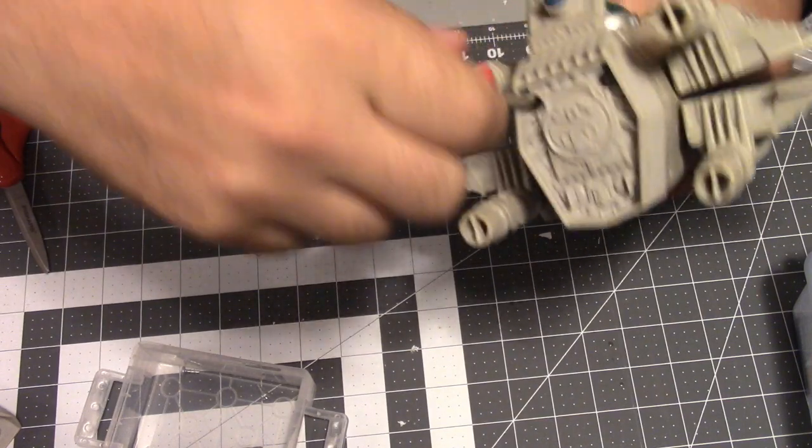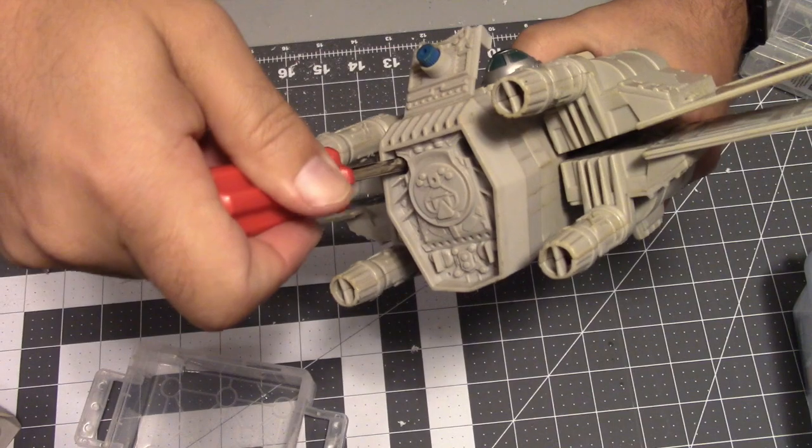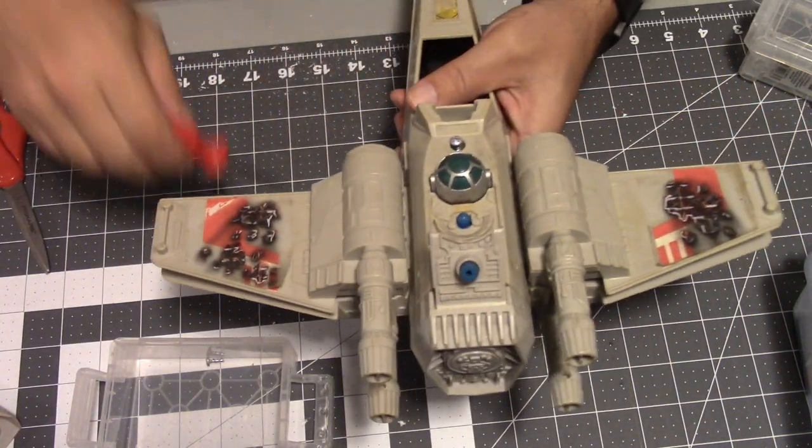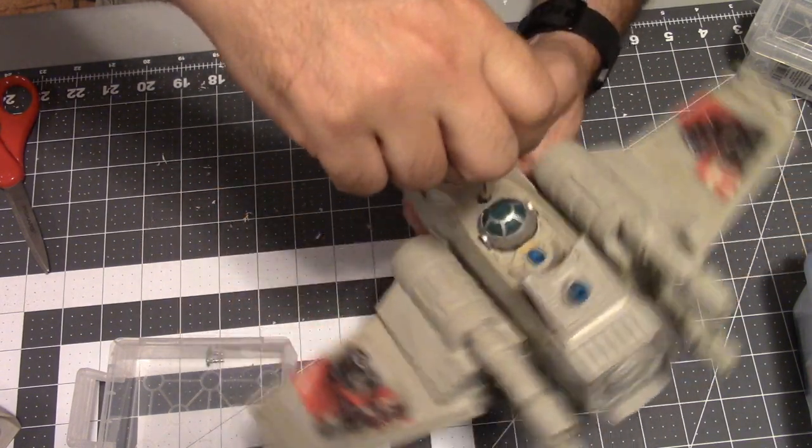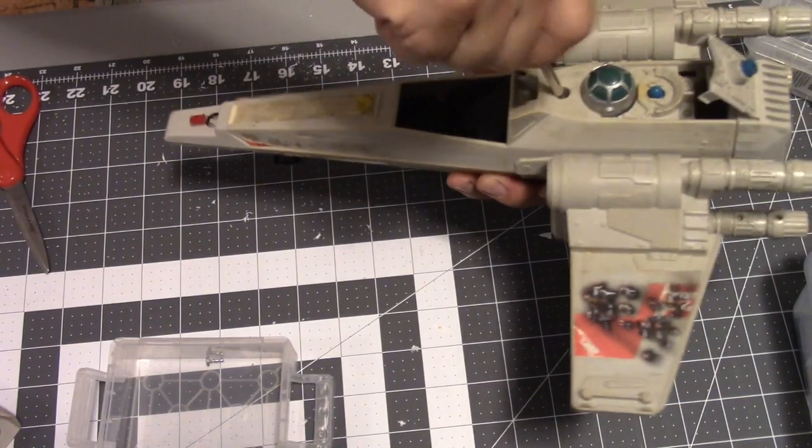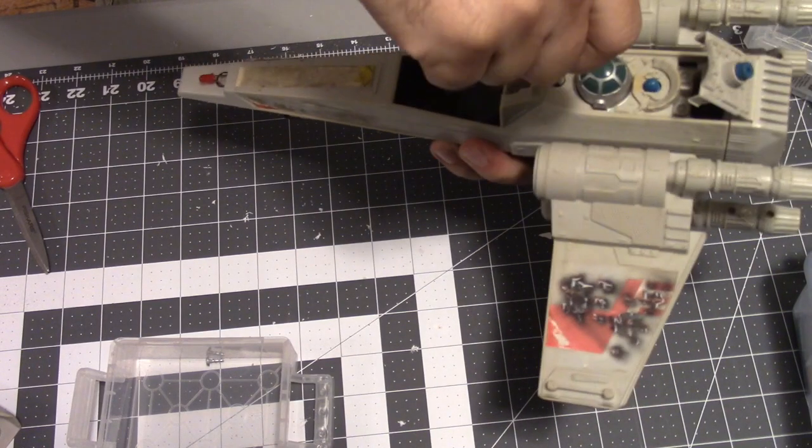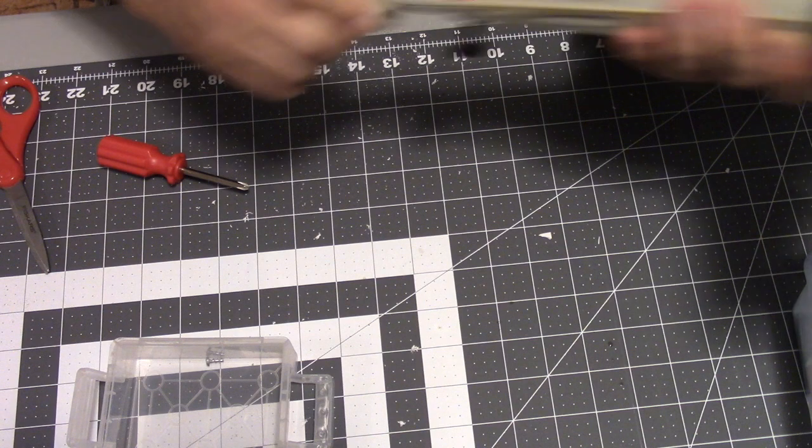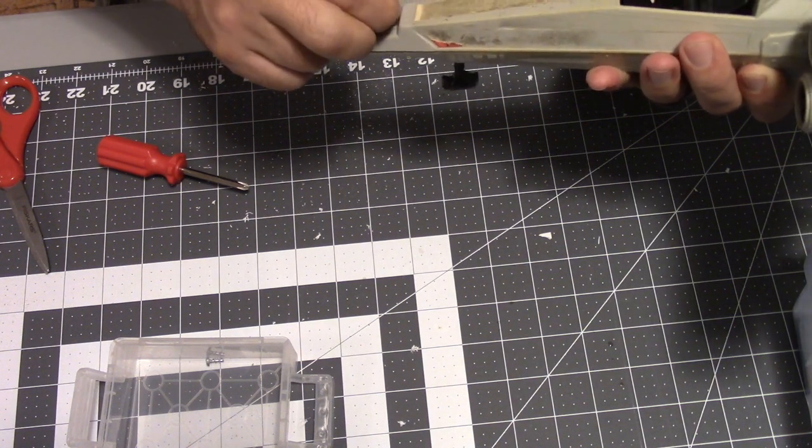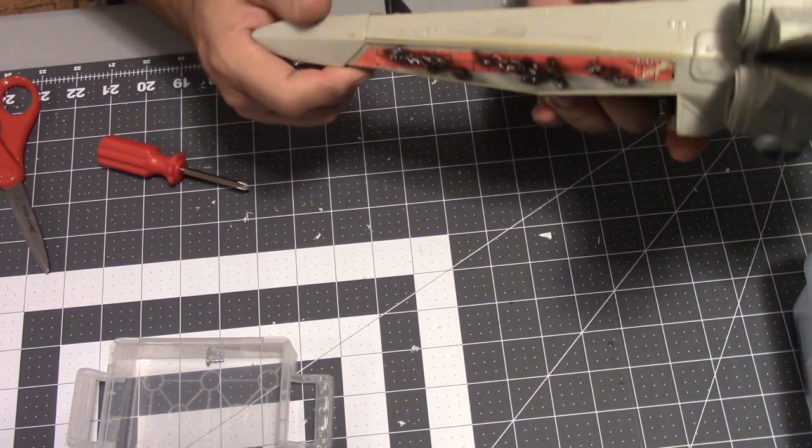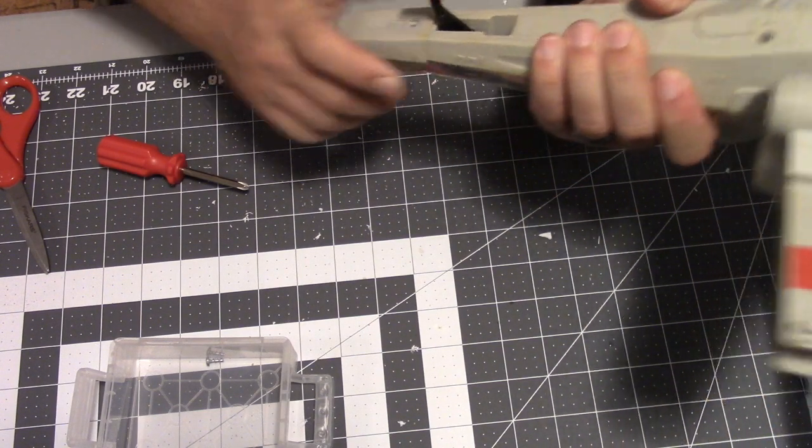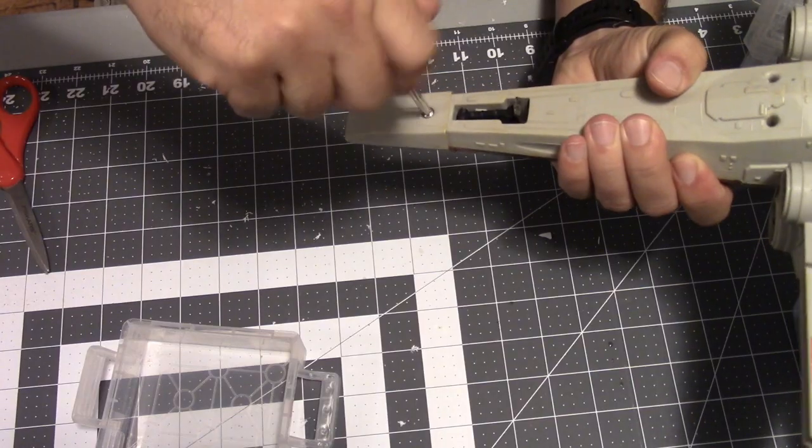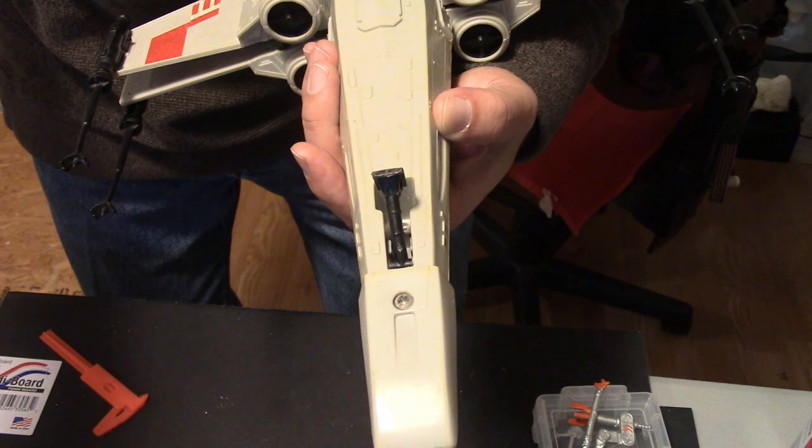Last two screws: one for the center of the body and one in our nose. And just like that, with that last screw, she's back together.